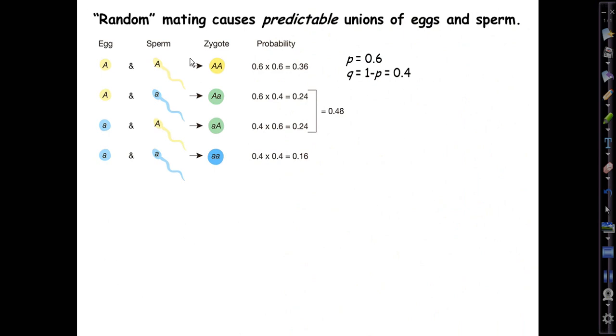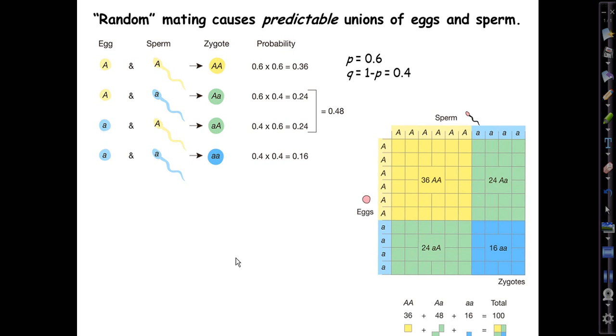Now, random mating. In an outbred population, the union of eggs and sperm are just governed by these probabilities, and they result in predictable proportions of the three genotypes that are possible at a diploid locus with two alleles. So, the chance that two big A's come together, one in an egg, one in a sperm, to make a big A big A homozygote would be 0.6 times 0.6, or 36 percent. That's shown in this proportional square. It's not exactly a Punnett square, but it's like that, with the eggs and their frequencies on one axis, the sperm and their genotypes, their allele types on the other axis. So, out of 100 zygotes formed, we expect 36 of them to be big A big A homozygotes.